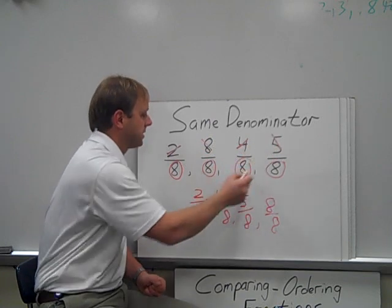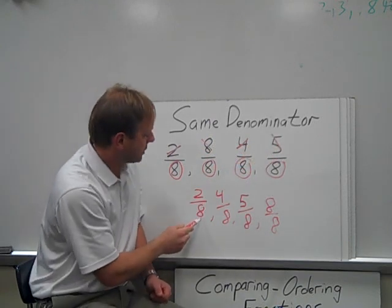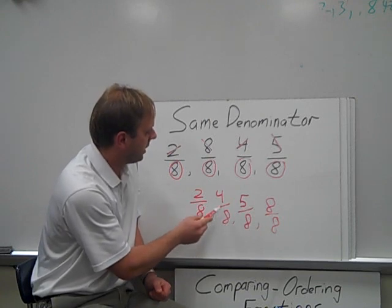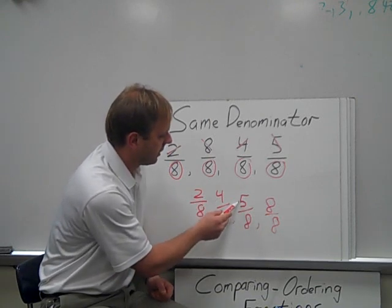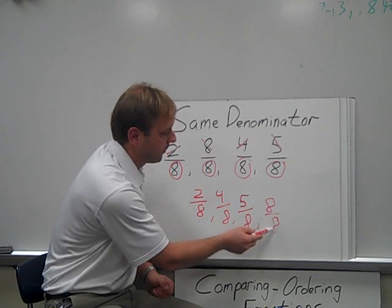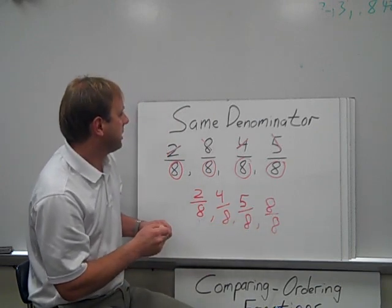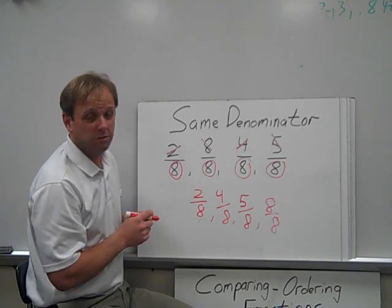So, as we went through these, we know that out of a total of eight parts, we have two, or out of a total of eight, we have four. Out of a total of eight, we have five. And out of a total of eight, we have all eight, or that equals one as well. So, same denominator fractions are not too challenging.